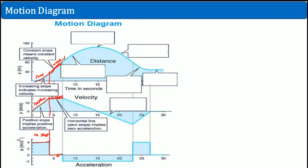Now notice this decreasing slope — the position curves down. The concavity is down, and that is why the velocity here is decreasing and the acceleration is a constant negative. The constant was positive when it was curving up; the constant is negative because it's curving down. Curving up means a positive linear velocity slope; curving down means a negative constant slope on the acceleration.